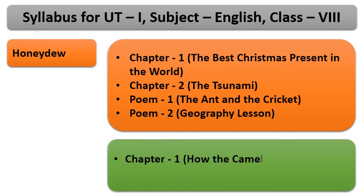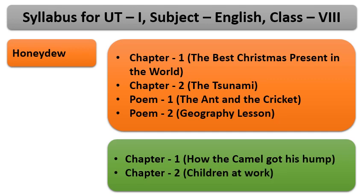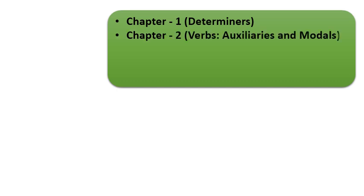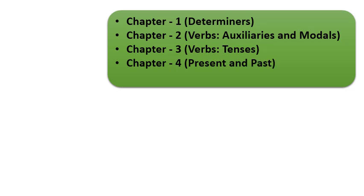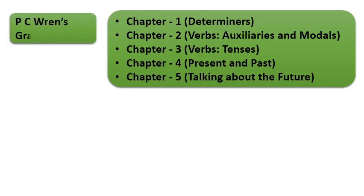Chapter 1, How Camel Got His Hump. Chapter 2, Children at Work. These chapters are taken from your supplementary book, that is, It So Happened. Chapter 1, that is Determiners. Chapter 2, that is Verbs, Auxiliaries and Modals. Chapter 3, that is Verbs, Tenses. Chapter 4, that is Present and Past. Chapter 5, that is Talking About the Future. These all chapters are taken from P.C. Wren's Grammar Book.